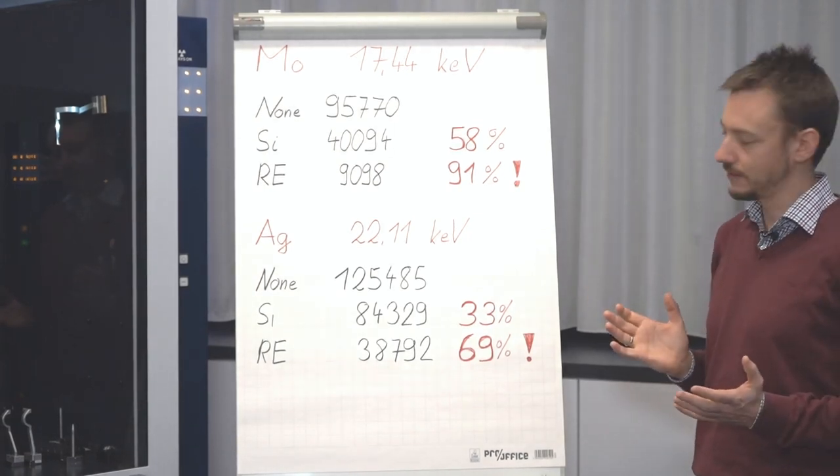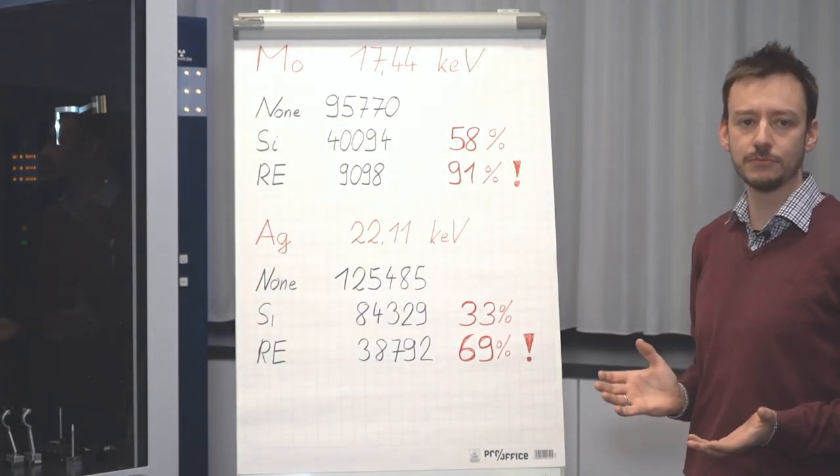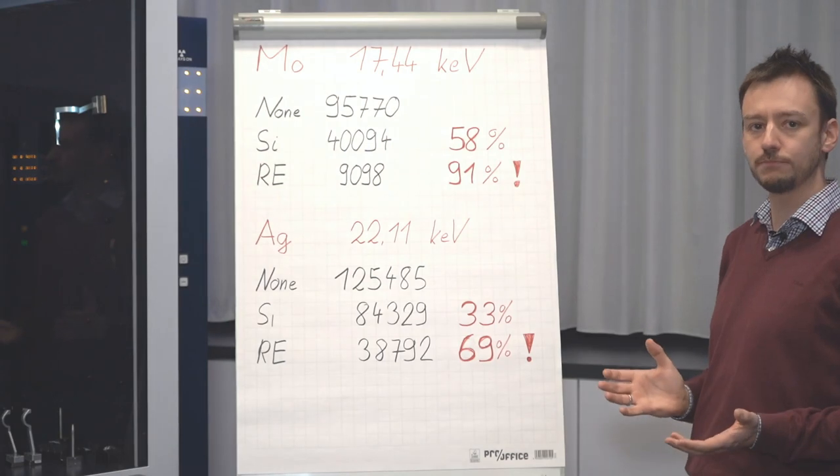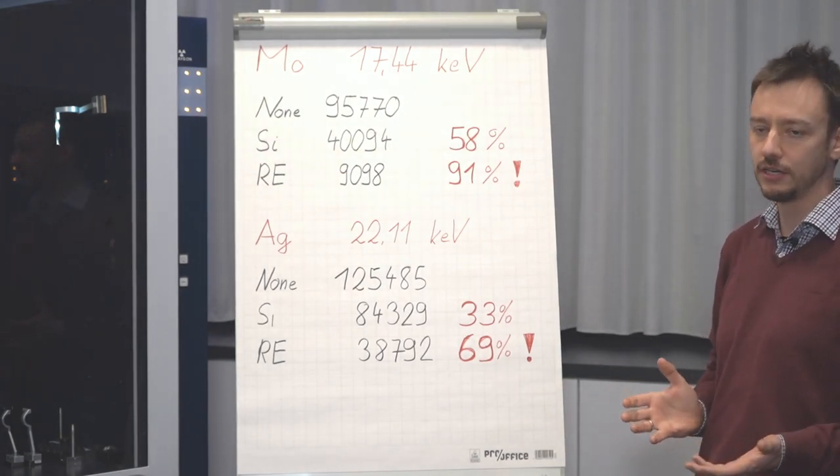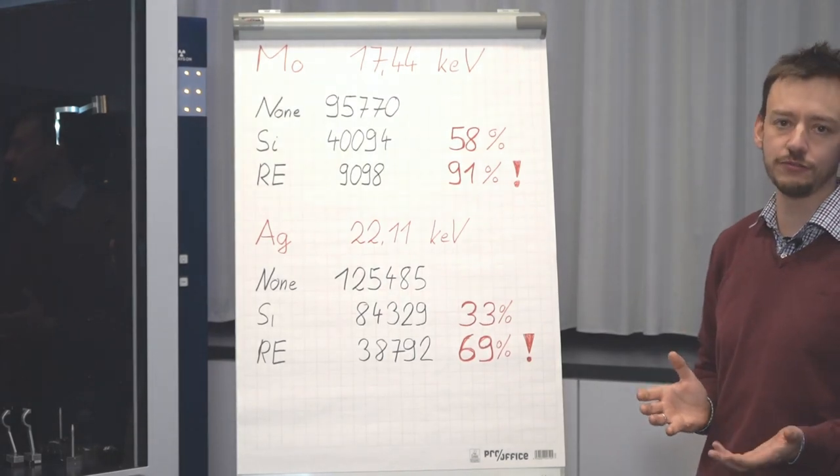So to summarize this silicon is just not a good absorber for hard radiation. If you want to properly detect harder radiation like molybdenum or silver you have to go for an x-ray conversion material.